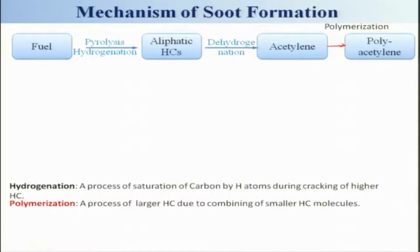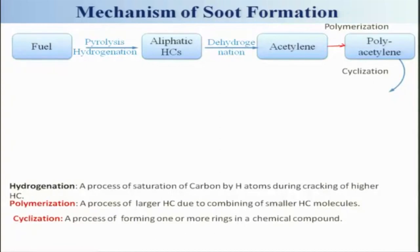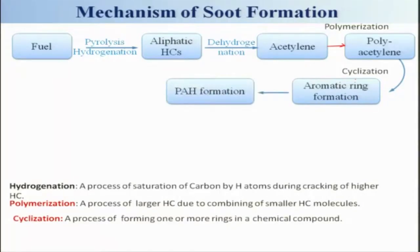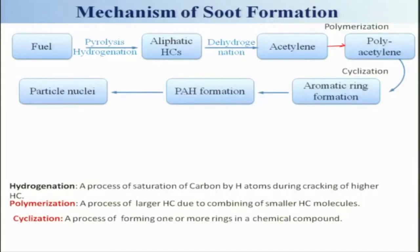After polyacetylene formation, cyclization takes place — cyclization being the process of forming one or more rings in a chemical compound, like the benzene ring structure. This leads to aromatic ring formations. Then you get patch formations, and a patch is a very important precursor. This patch is basically polyaromatic hydrocarbons (PAH). This patch is then converted into particle nuclei, which is the initiation of the soot particle — transitioning from the gaseous phase to a solid soot nuclei.